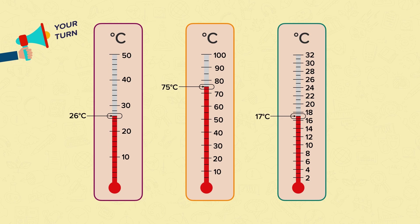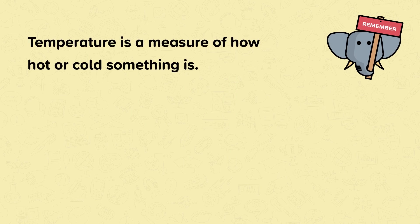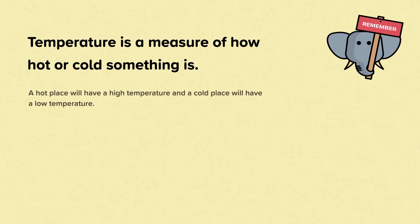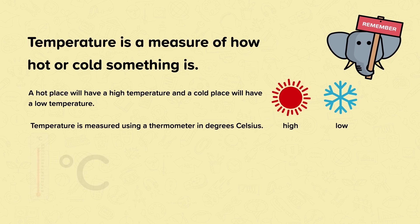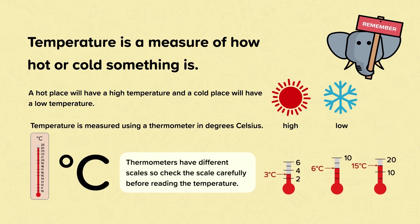Well done if you got all of those correct. So remember: temperature is a measure of how hot or cold something is. A hot place will have a high temperature and a cold place will have a low temperature. Temperature is measured using a thermometer in degrees Celsius. Thermometers have different scales, so check the scale carefully before reading the temperature.